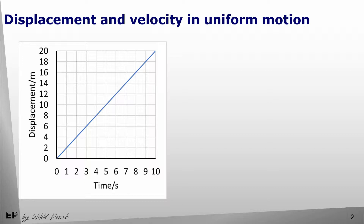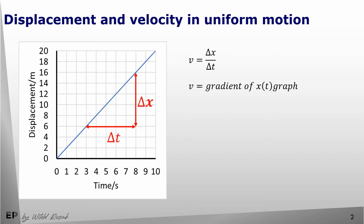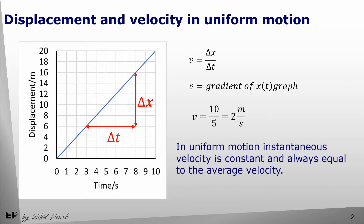We just saw that the displacement-time graph in uniform motion is a straight line. Velocity was defined as the change of displacement divided by the change of time. These two arrows on the graph show the change of displacement and the time in which the change occurred. Dividing the change of displacement by the change of time gives us the gradient of the displacement-time graph. We can conclude that the gradient of the displacement-time graph represents the velocity. In uniform motion velocity never changes, so instantaneous and average velocities are equal.